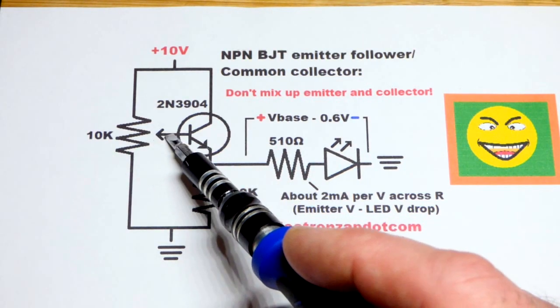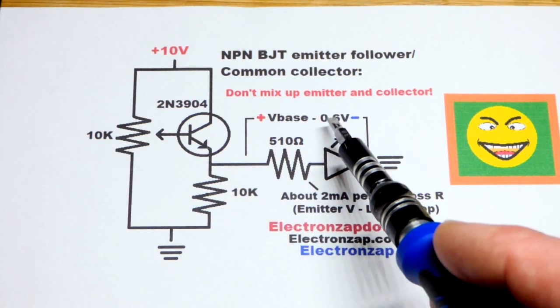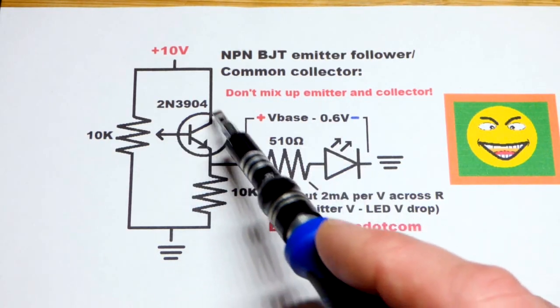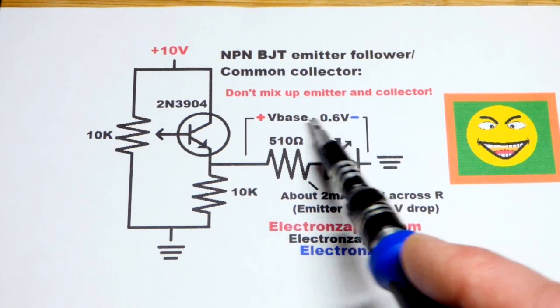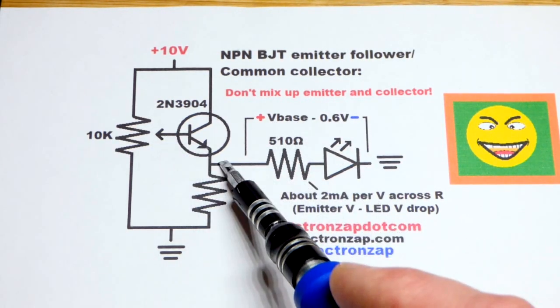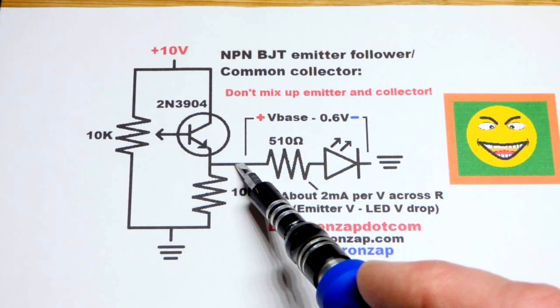We're setting a voltage to the base, and that voltage is going to be followed at the emitter. The thing, though, with using an NPN bipolar junction transistor, you're going to lose about 0.6 volts from the voltage at the base. So if you've got 5.6 volts there, you're going to have about 5 volts right there.